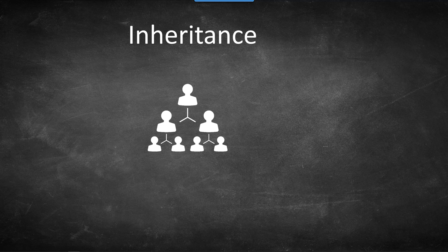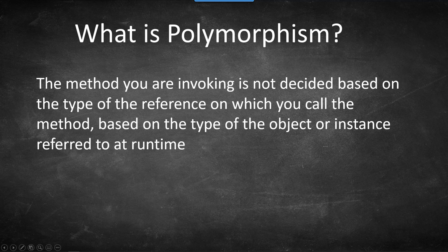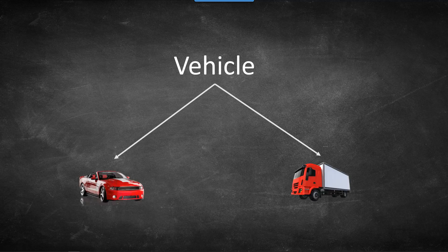So what exactly is polymorphism? The method you are invoking is not decided based on the type of reference on which you call the method, but based on the type of the object or instance referred at runtime. For example, we have a vehicle class. We extended vehicle class through inheritance and came up with a car class and a truck class. So wherever an instance of vehicle is passed in your code, you can pass an instance of car or truck. That's the power of inheritance.